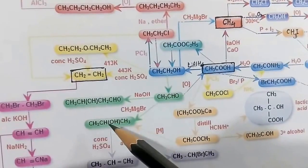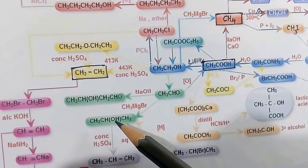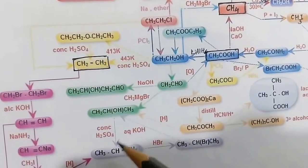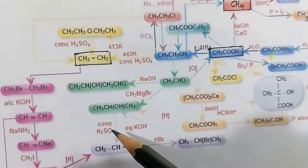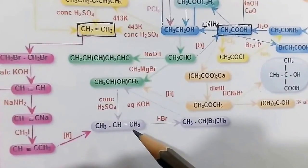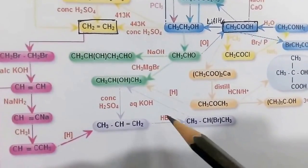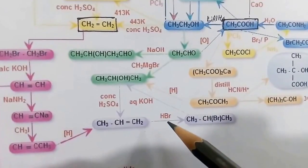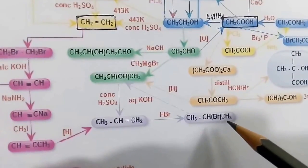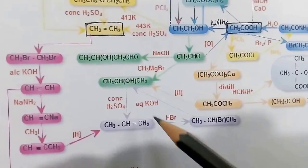Acetaldehyde, being an aldehyde, can react with methyl magnesium bromide (Grignard reagent), giving 2-propanol. 2-Propanol treated with concentrated H₂SO₄ undergoes dehydration, giving propene. Propene treated with HBr follows Markovnikov's rule, giving 2-bromopropane.